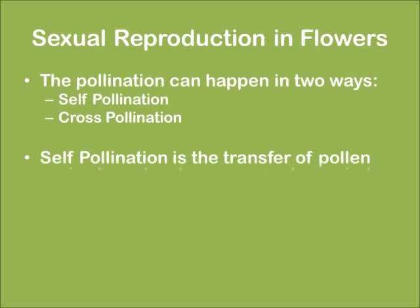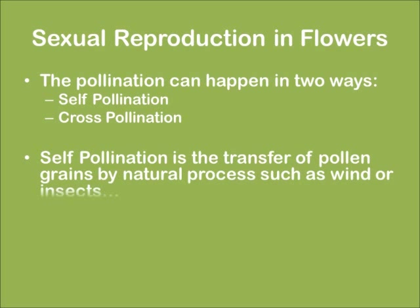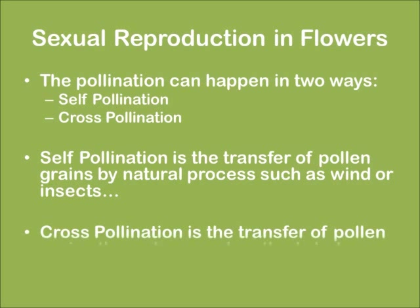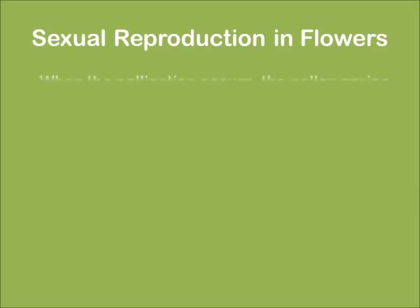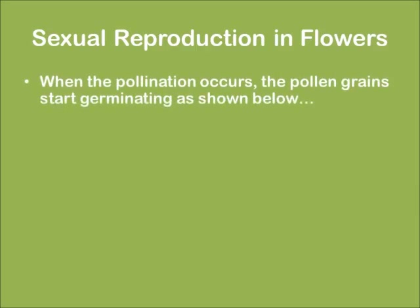Self-pollination is a transfer of pollen grains by natural processes such as wind or insects. Cross-pollination is a transfer of pollen grains through a manual method between two different flowers. When pollination occurs, the pollen grains start germinating.